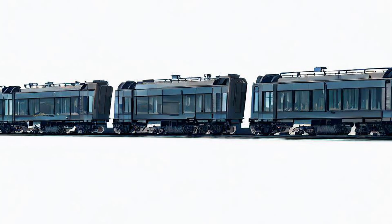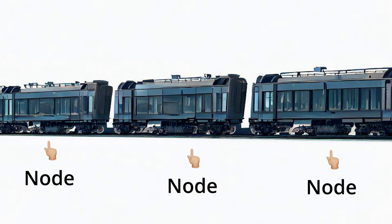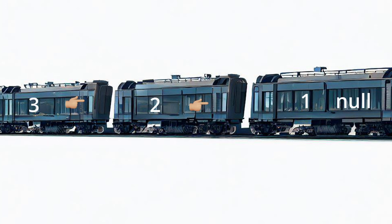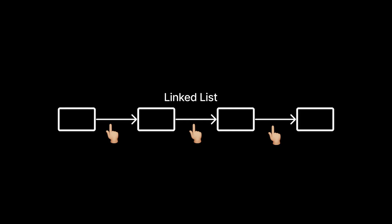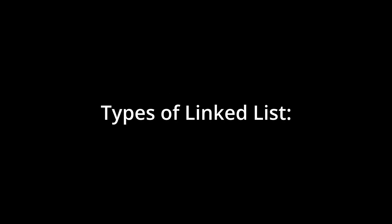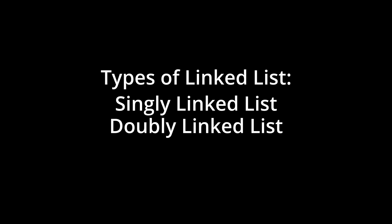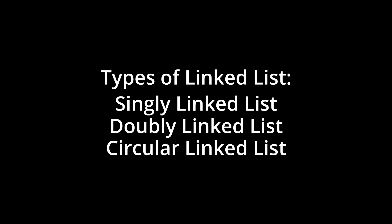Linked List. Imagine a train with a collection of cars linked together. Each train car is called a node and each node holds two things: an item or a value, and a reference to the next train car. Just like in a train where each car is connected to the next, each node is connected to the next in a linked list. There are various types of linked lists, but the important ones are singly linked list, doubly linked list, and circular linked list.